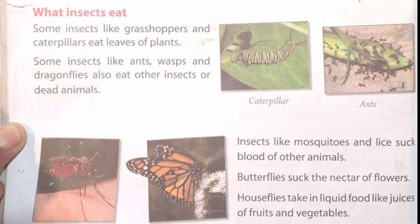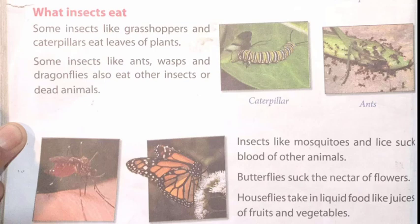What insects eat: some insects like grasshoppers and caterpillars eat leaves of plants. Some insects like ants, wasps and dragonflies also eat other insects or dead animals. Insects like mosquitoes and lice suck blood of other animals. Butterflies suck the nectar of flowers. House flies take in liquid food like juices of fruits and vegetables.